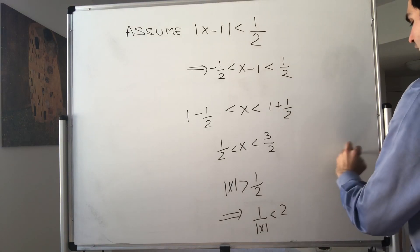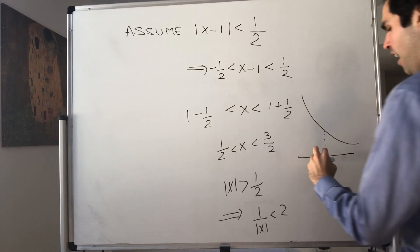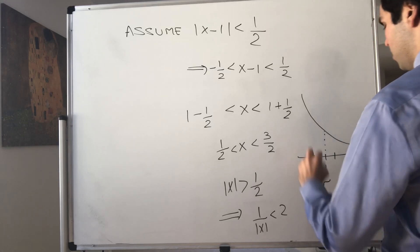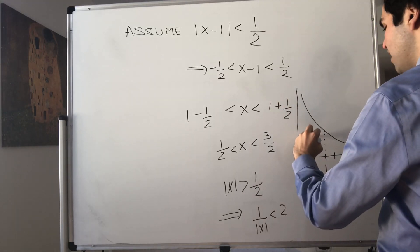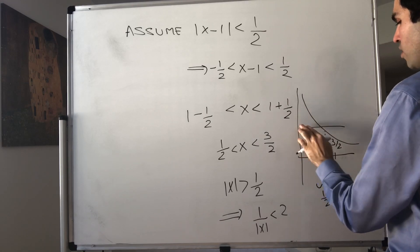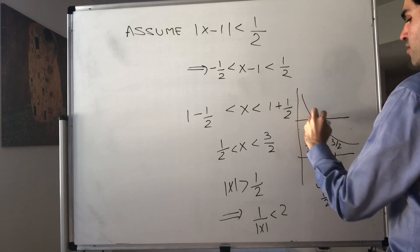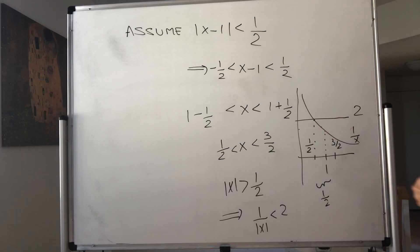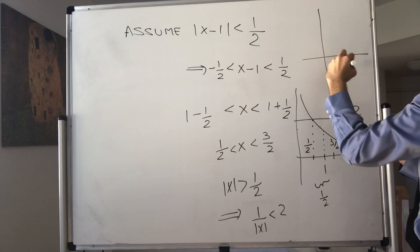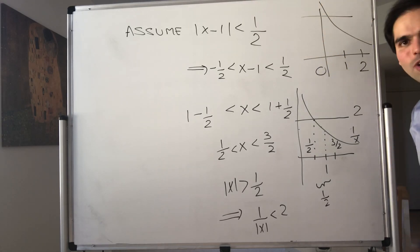Here's the geometric idea: on the number line, with 1/x marked at 1 and 0 nearby, if we assume x is at most 1/2 away from 1, then x is between 1/2 and 3/2, and therefore 1/x is at most 2. That's what we want — 1/x to be small. By contrast, if you allow x all the way down to 0, then 1/x isn't bounded above by any fixed number because it goes to infinity.